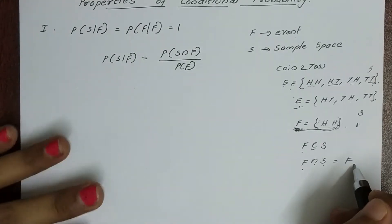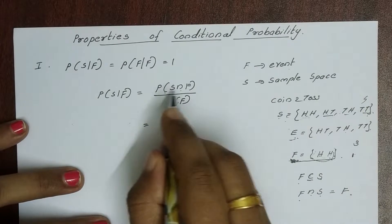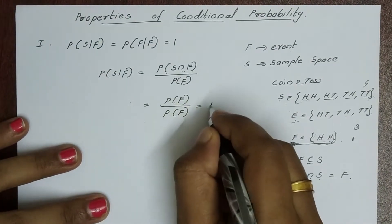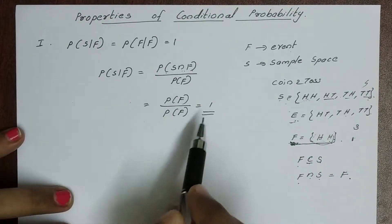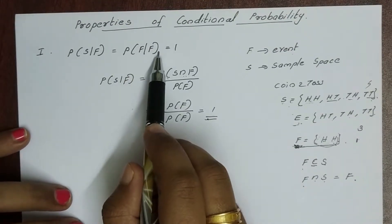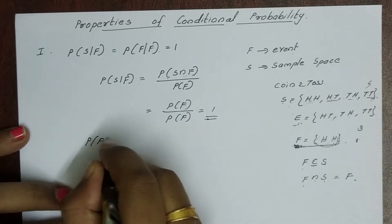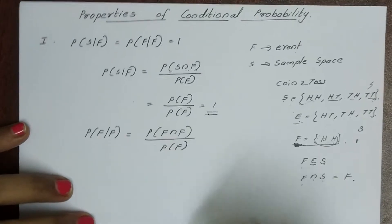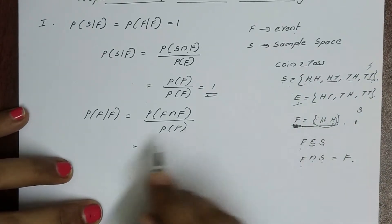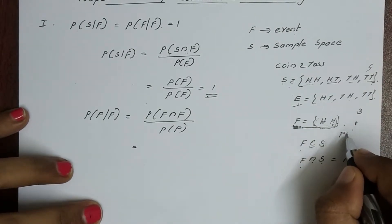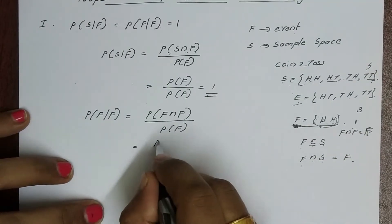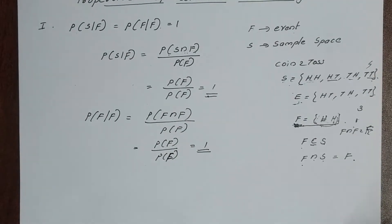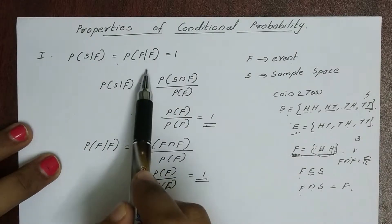Since S intersection F equals F, the probability of S given F equals probability of F divided by probability of F, which equals 1. So probability of S given F is equal to 1, and probability of F given F is also equal to 1. This proves the first property.